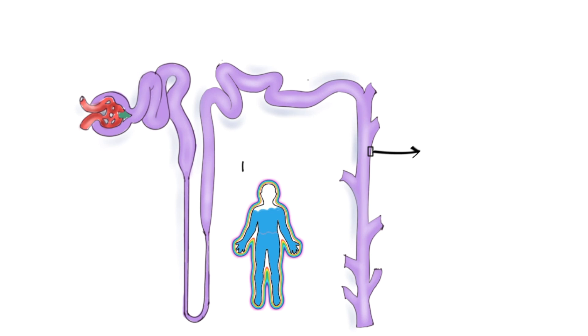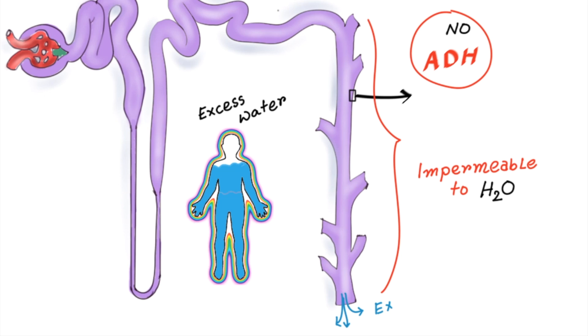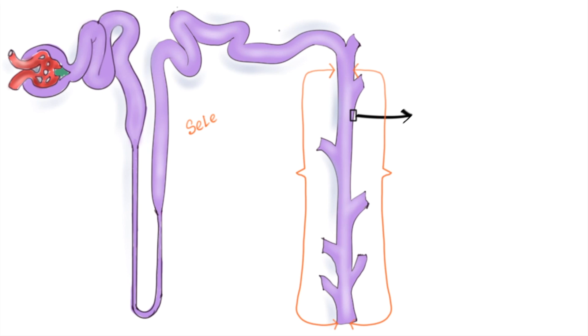On the other hand, if you are over-hydrated, secretion of ADH in the blood will be less. So the collecting duct will be less permeable to water so that excess water can pass out in the urine. So we can say that the collecting duct is selectively permeable to water, which is regulated by anti-diuretic hormone.